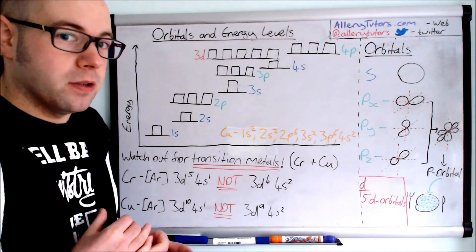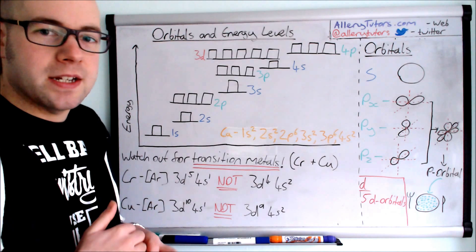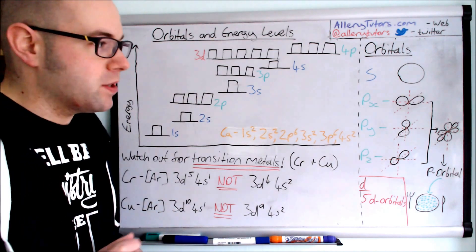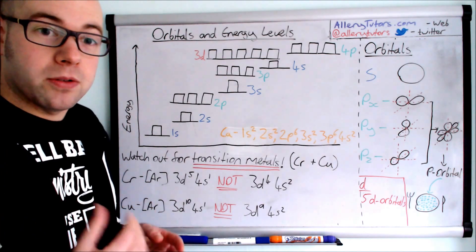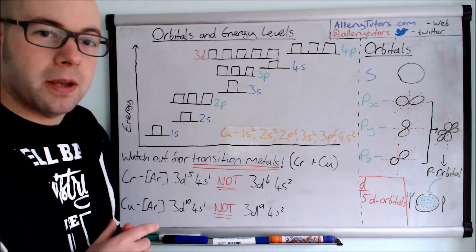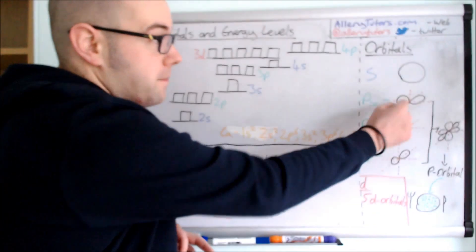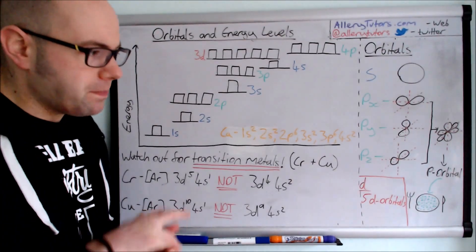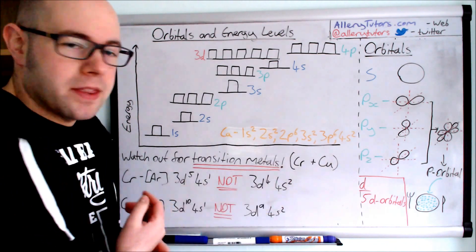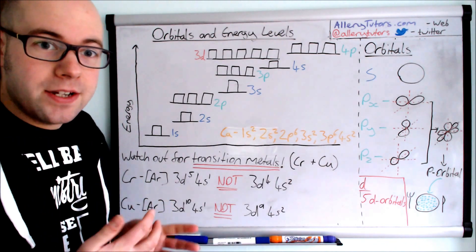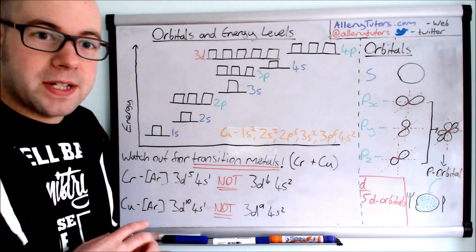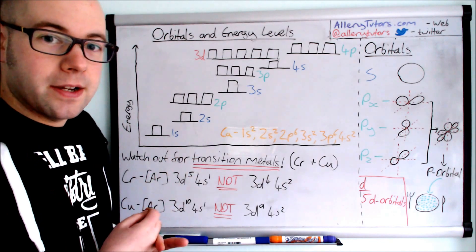Each one of these sub-orbitals - px, py, pz - can hold two electrons, and that's why we've got two lobes. It's like a figure of eight. Because we have three of them, that means we can hold a maximum of six electrons in the p orbital. The d orbital has five sub-orbitals. Each can hold two electrons, so two times five means you get 10 electrons in total in the d orbitals.